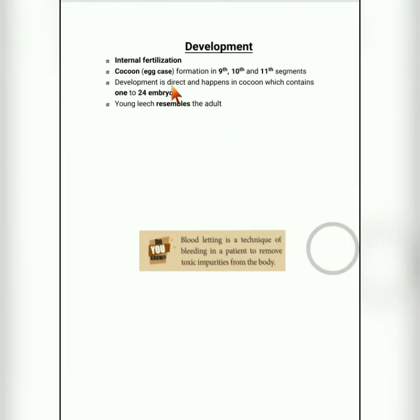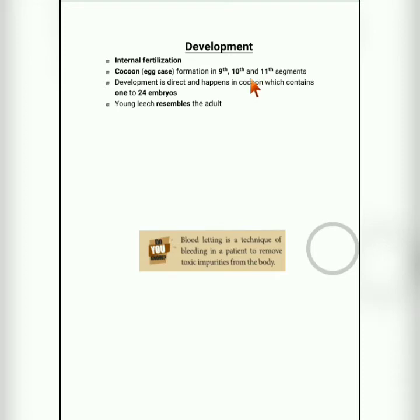Internal fertilization occurs in leech — that is, the fusion of male and female gametes happens inside the body. After fertilization, a cocoon or egg case is formed in a temporary organ called the clitellum, found around the 9th to 11th segments. Young ones develop inside the cocoon, and the development is direct, with 1 to 24 embryos at a time.